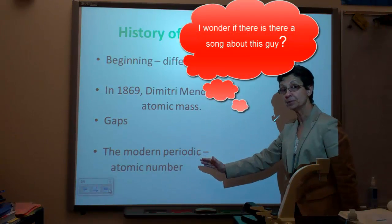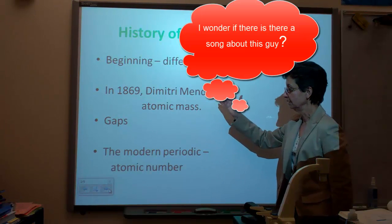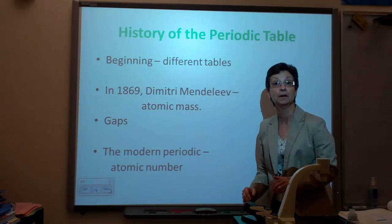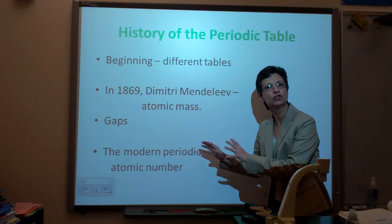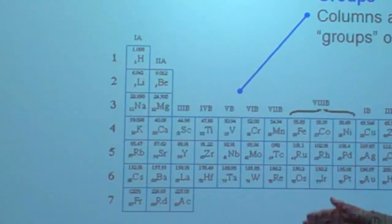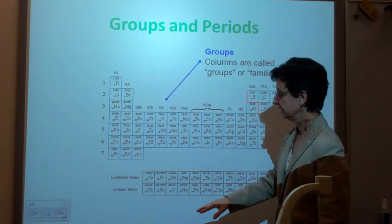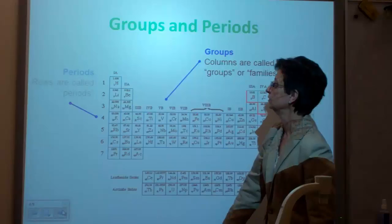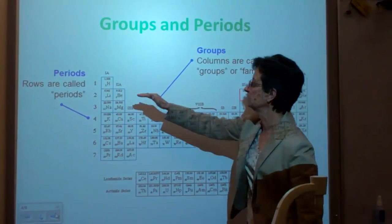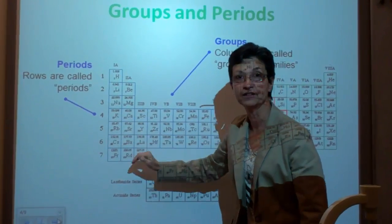The modern periodic table — his periodic table was organized by atomic mass, but the modern periodic table is organized by atomic numbers. There weren't too many changes there. So we're going to talk about groups — groups are vertical in the periodic table. And we're going to talk about periods — periods are the rows. So this is period 1, period 2, period 3, period 4, 5, 6, and 7.